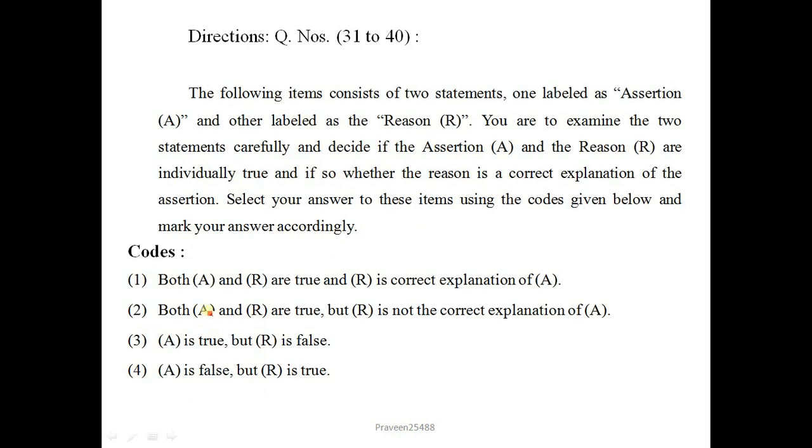Direction for question number 31 to 40. The following items consist of two statements, one labeled as assertion and other labeled as reason. You have to examine the two statements carefully and decide if the assertion and reason are individually true and if so whether the reason is the correct explanation of the assertion. Answer will be 1 if both A and R are true and R is the correct explanation of A. Answer is 2 if both A and R are true but R is not the correct explanation of A. Answer will be 3 if A is true but R is false. Answer will be 4 if A is false but R is true.